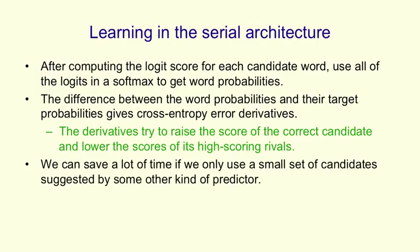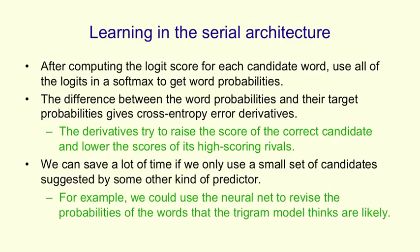We can save a lot of time in this architecture if, instead of considering all possible candidate words, we only consider a small set, perhaps candidate words suggested by some other predictor. For example, we could use the neural net to revise the probabilities of the words that the trigram model thinks are likely.